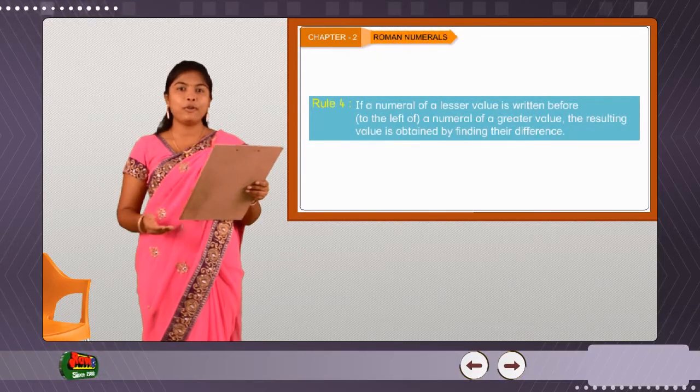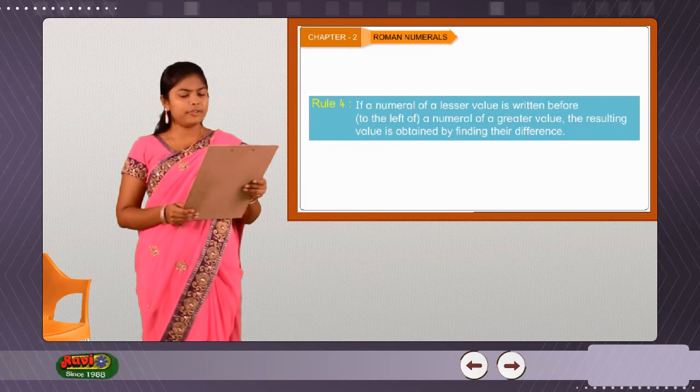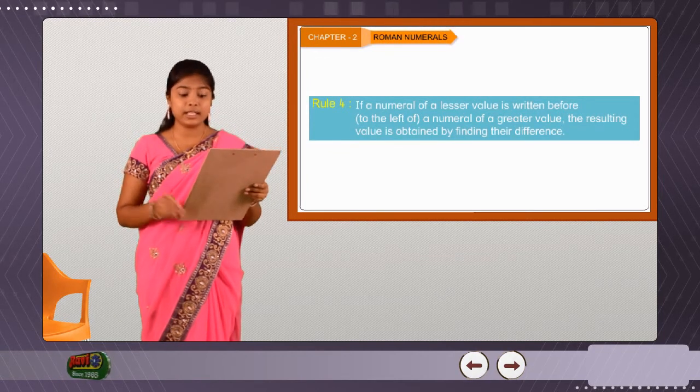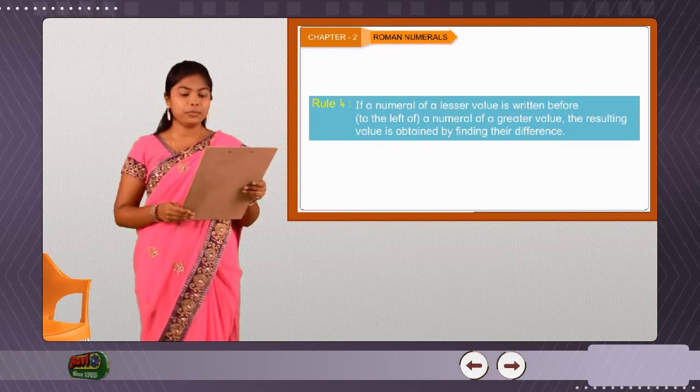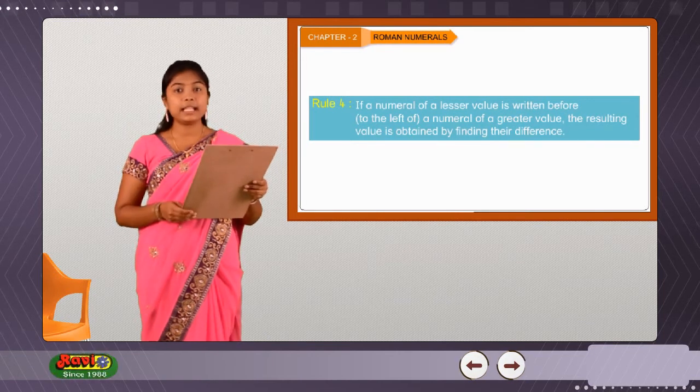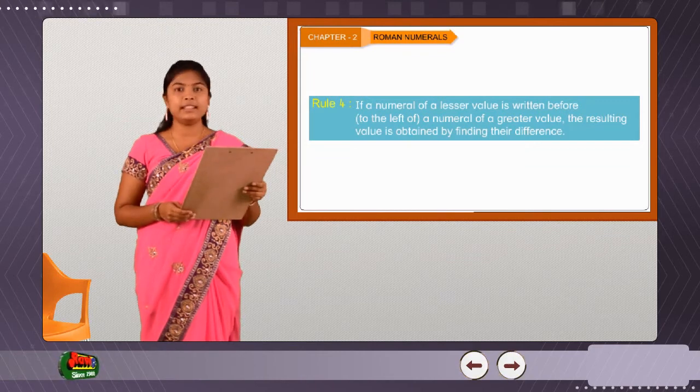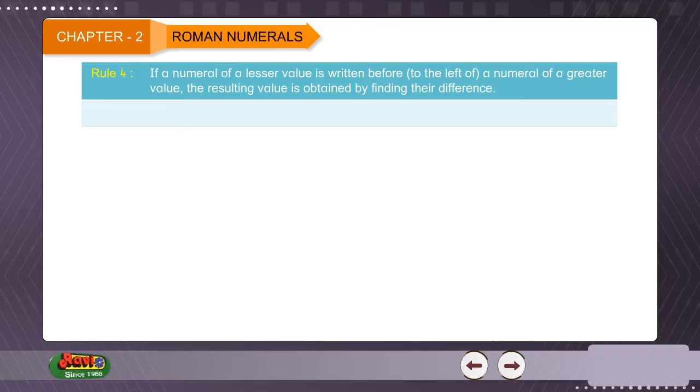Rule 4. If a numeral of a lesser value is written before to the left of a numeral of a greater value, the resulting value is obtained by finding their difference. Example, Roman numeral IV is equal to 5 minus 1 is equal to 4. Roman numeral IX is equal to 10 minus 1 is equal to 9.